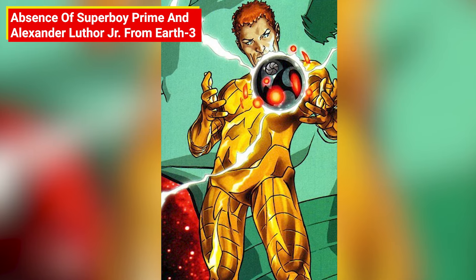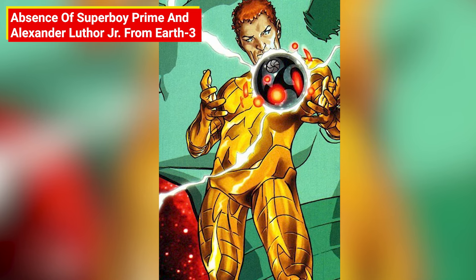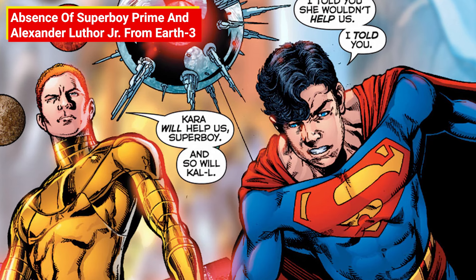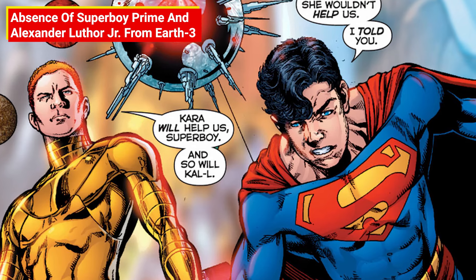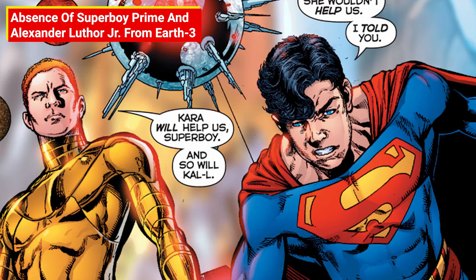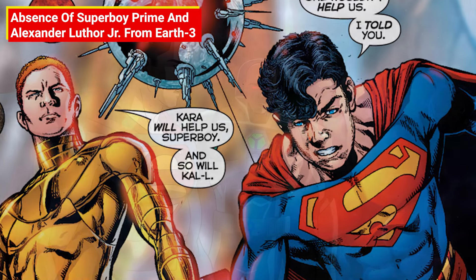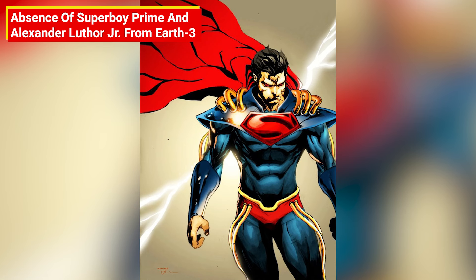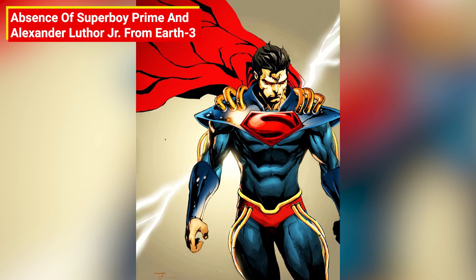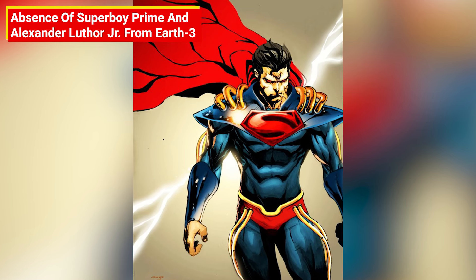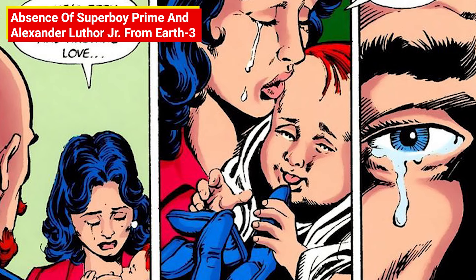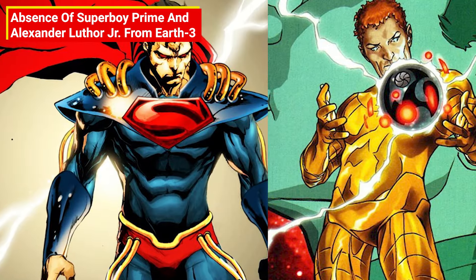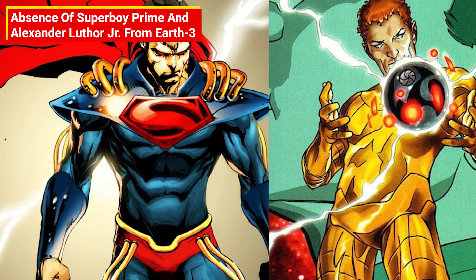The movie made a major change compared to the source material by totally omitting two major players of the Crisis: Alexander Luthor Jr. of Earth-3 and Superboy Prime of Earth-Prime. This was probably done to avoid confusion between too many multiple versions of singular characters sharing the same space. But given how important a role these two characters play in the DC universe as a whole, it seems like a wrong decision in hindsight. Superboy Prime belonged to a reality much like the real world, where the existence of superheroes is limited to the pages of comics. Alexander Luthor Jr. is the son of the heroic versions of Lex Luthor and Lois Lane of Earth-3. Both Superboy Prime and Alexander Luthor Jr. lost their worlds at the hands of Anti-Monitor and joined the heroes of the multiverse to counter the cosmic threat.